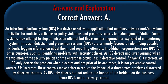Correct answer: A. Explanation: An intrusion detection system (IDS) is a device or software application that monitors network and/or system activities for malicious activities or policy violations and produces reports to a management station. Some systems may attempt to stop an intrusion attempt but this is neither required nor expected of a monitoring system. Intrusion detection and prevention systems (IDPS) are primarily focused on identifying possible incidents, logging information about them, and reporting attempts. Organizations also use IDPS for identifying problems with security policies, documenting existing threats, and deterring individuals from violating security policies. As IDS detects and gives warning when the violation of security policies occurs, it is a detective control.